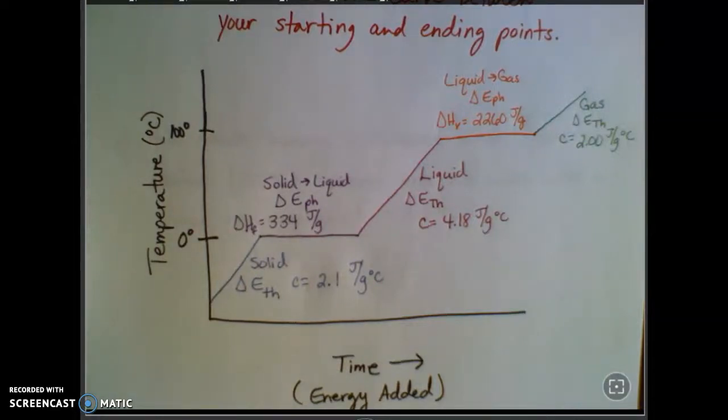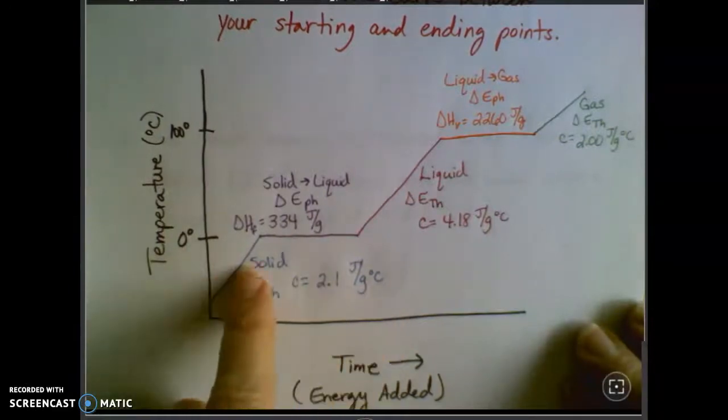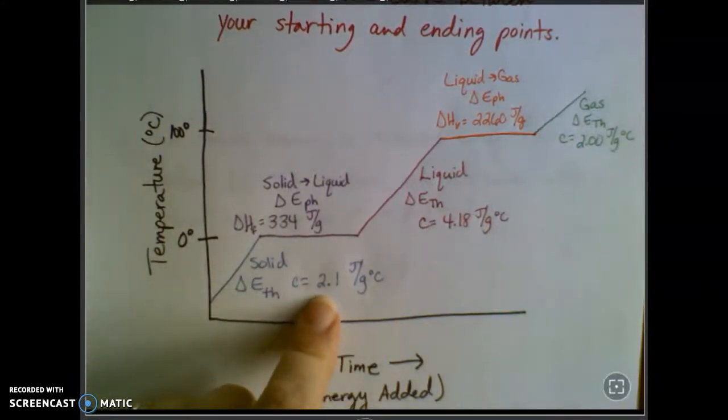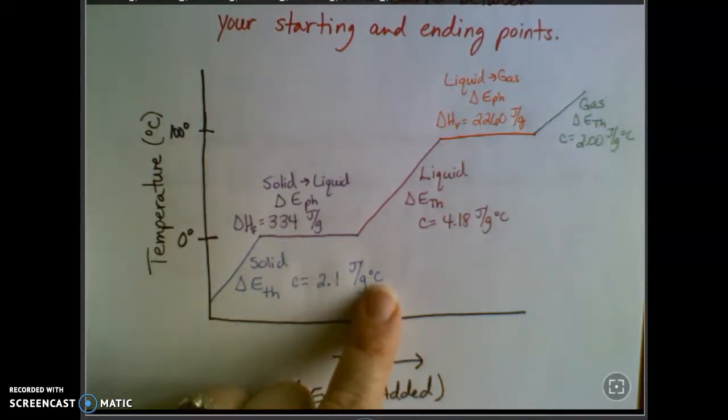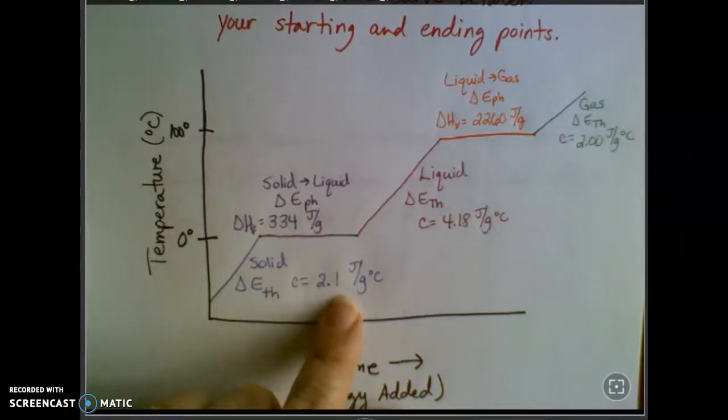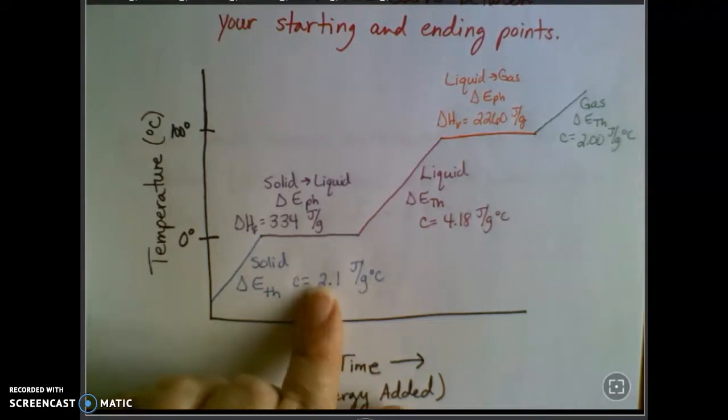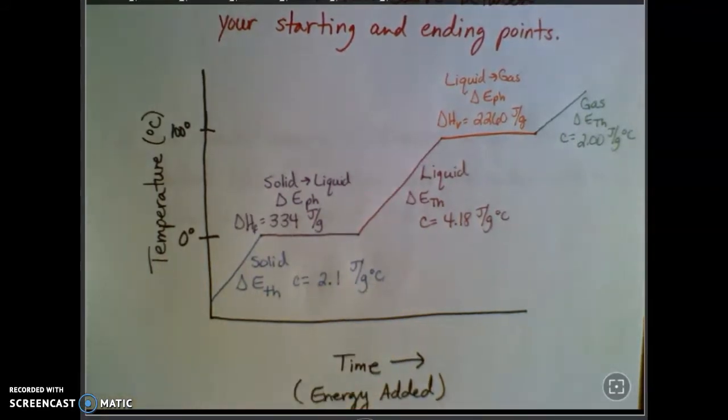Now, the numbers that we've got. It takes different amounts of energy to do each of these changes. If I'm looking at the solid here for ice, it takes 2.1 joules of energy, that J stands for joules, for every gram of water that I heat up by one degree Celsius. So if I have two grams of water, it's going to take twice that, or 4.2. If I have one gram of water and I'm heating it up by two degrees Celsius, it's going to take twice that.